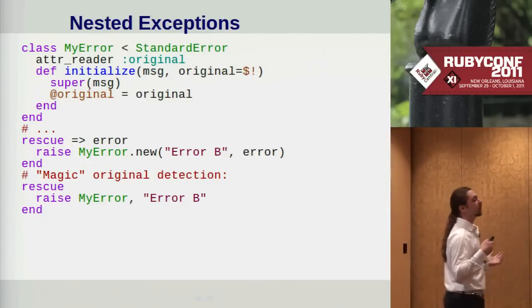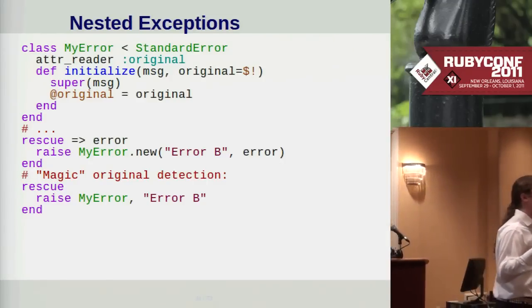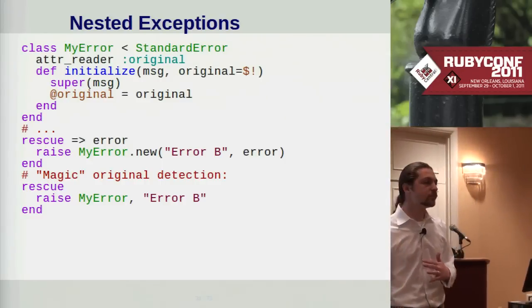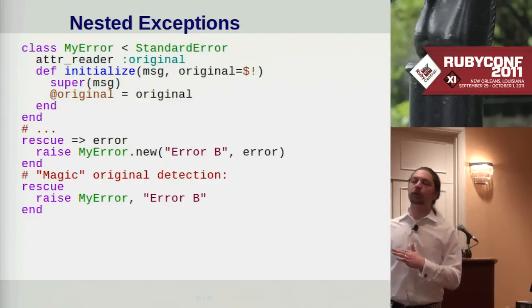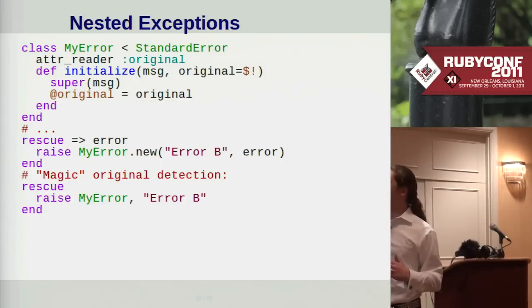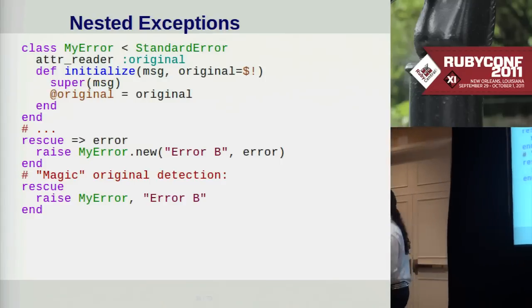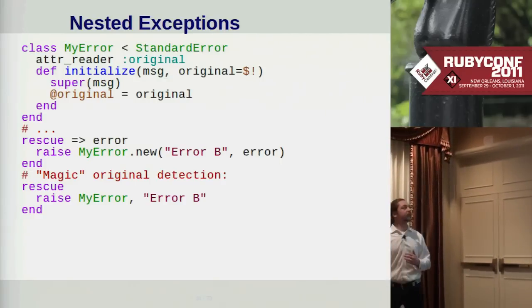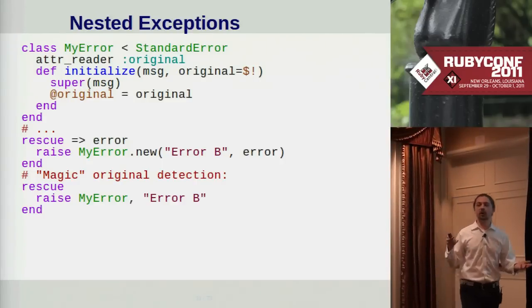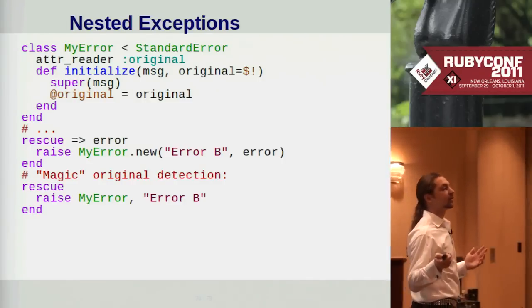A nested exception is simply an exception which carries a reference to the original exception, if any. Ruby doesn't have these out of the box, but it's very easy to define your own. It has a slot for the original, and you can pass that original error in when raising. We've been clever though: the default value for that original attribute is $! — the error info variable — which always holds a reference to the currently active exception. So it magically picks up from the environment the exception that was active when it was raised.